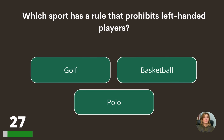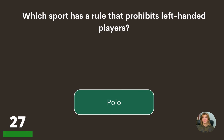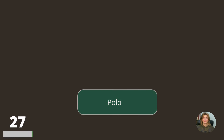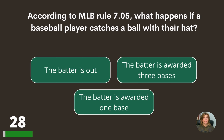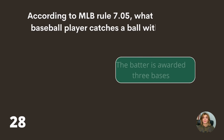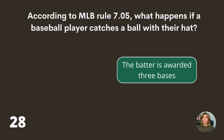Which sport has a rule that prohibits left-handed players — golf, basketball, or polo? According to MLB Rule 7.05, what happens if a baseball player catches a ball with their hat — the batter is out, the batter is awarded three bases, or the batter is awarded one base? The batter is awarded three bases.